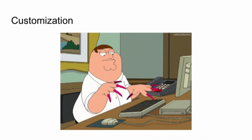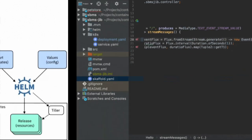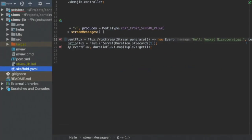There are two cool projects that work perfectly with Skaffold: Helm and Kustomize. Helm is a package manager for Kubernetes. It is composed of two parts: the Helm client that you interact with in your daily development, and Tiller, which sits in your Kubernetes cluster and deploys your changes. Charts in Helm are basically your application — you can make your own custom chart, download charts produced by the community, depend on other charts, and deploy multiple versions of the same chart. The part that interests us is configuration over values.